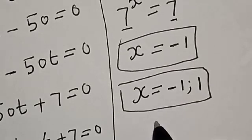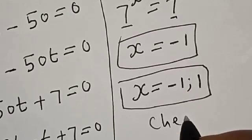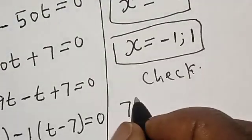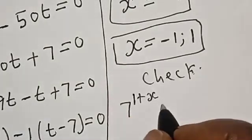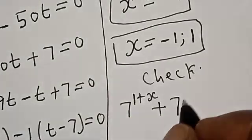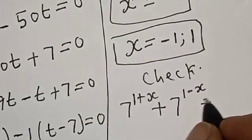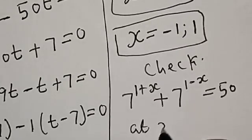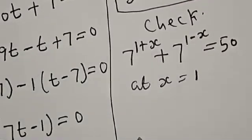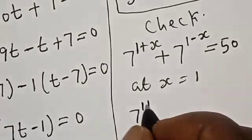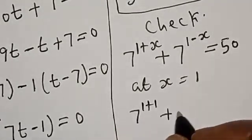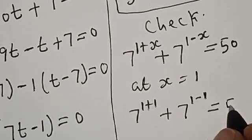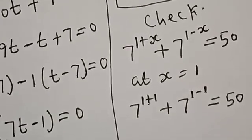We can check to confirm if our answer is right or wrong. Let's check. We have the given equation: 7 raised to the power 1 plus s, plus 7 raised to the power 1 minus s, is equal to 50. At s equal to 1, we have 7 raised to the power 1 plus 1, plus 7 raised to the power 1 minus 1, which must equal 50. This gives 7 squared plus 7 to the power 0.